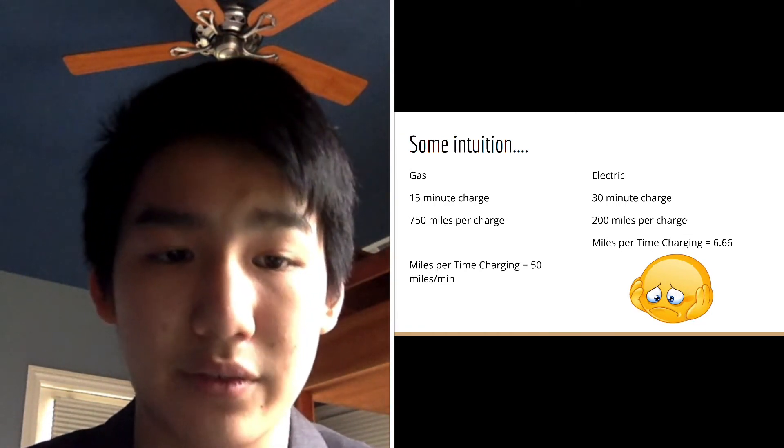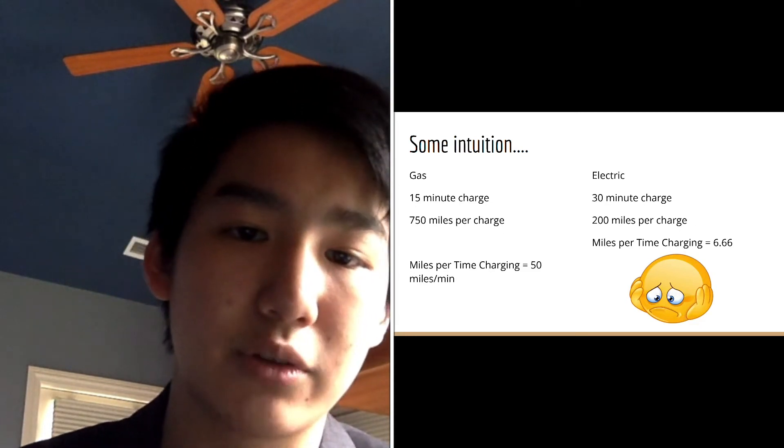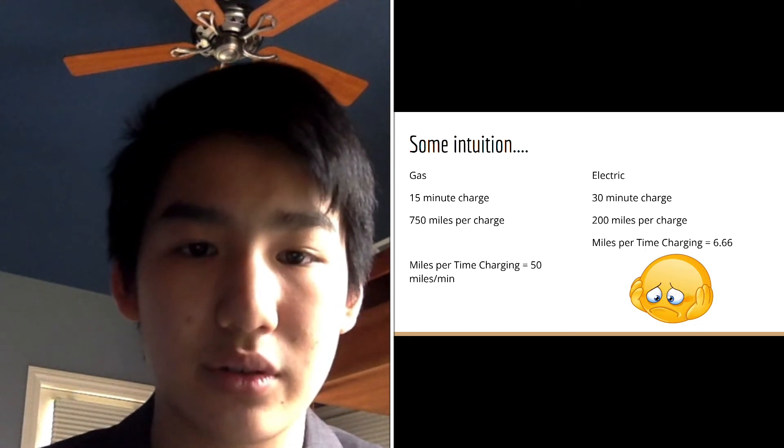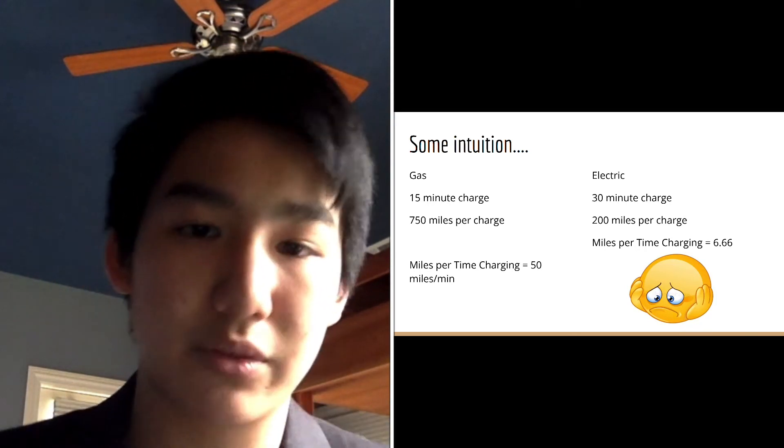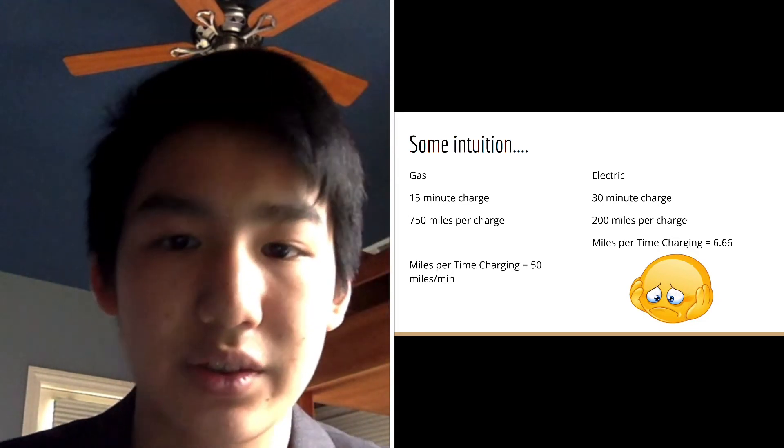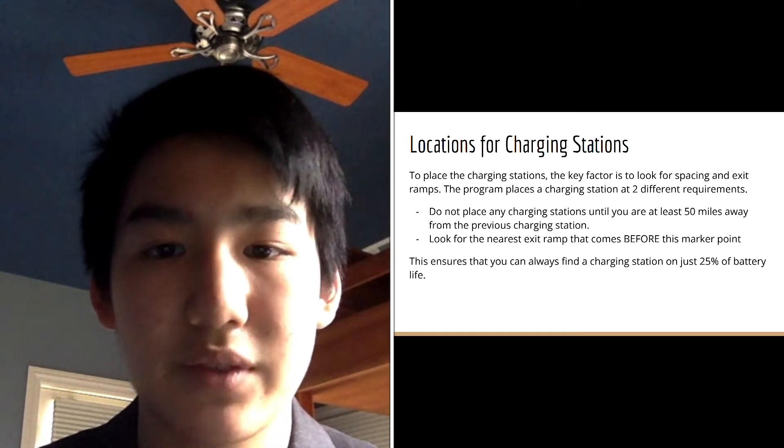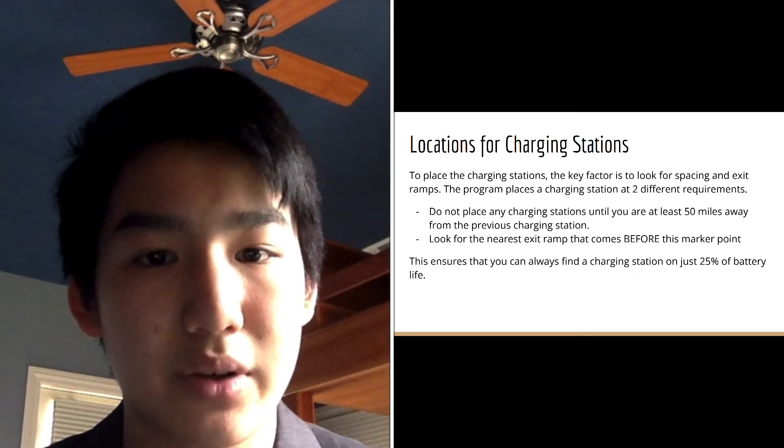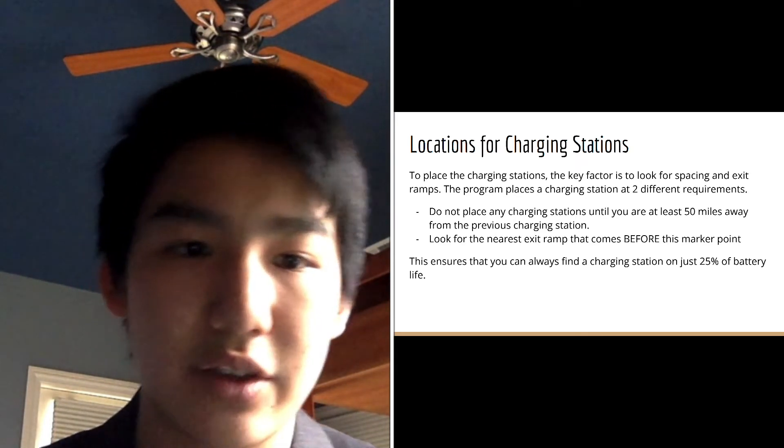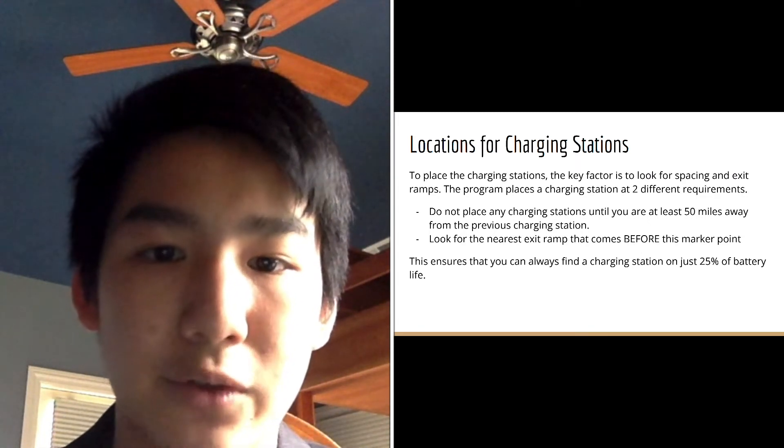So, from here on with a little bit of intuition, we're finally able to begin creating our program. By doing a little bit of preemptive intuition, we're able to make sure that our program is reasonable and accurate to the prompt. Using the existing habits of truck drivers, we found that on average, charging stations should be placed 50 miles apart. This is because placing stations 50 miles apart ensures that the trucks are able to reach any charging station just on 20% of their battery life, as recommended by Tesla to avoid damaging the battery.